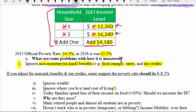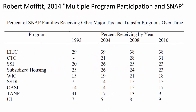A 2014 study by Robert Moffitt titled 'Multiple Program Participation and SNAP' looked at people on the Supplemental Nutrition Assistance Program. About 38% of them were also receiving the earned income tax credit, 31% received the child tax credit, 23% received SSI (Supplemental Security Income, largely for disabled people), 23% received housing subsidies, and 15% received Social Security Disability Income.